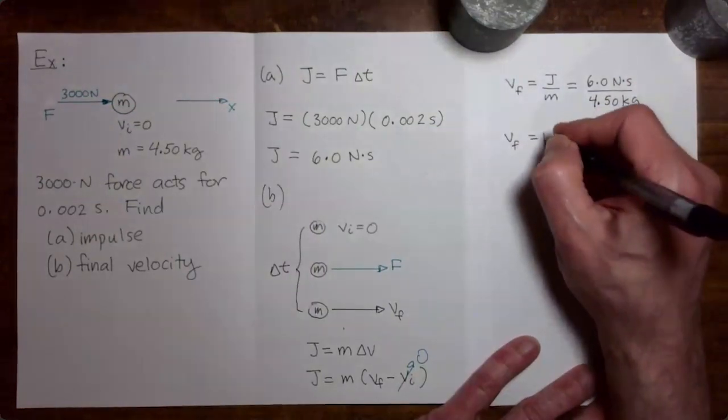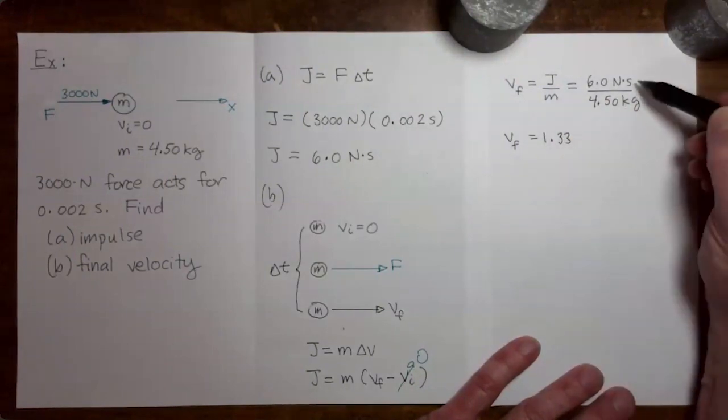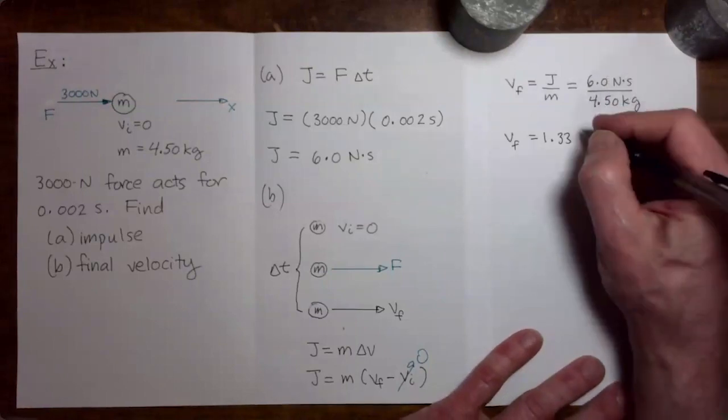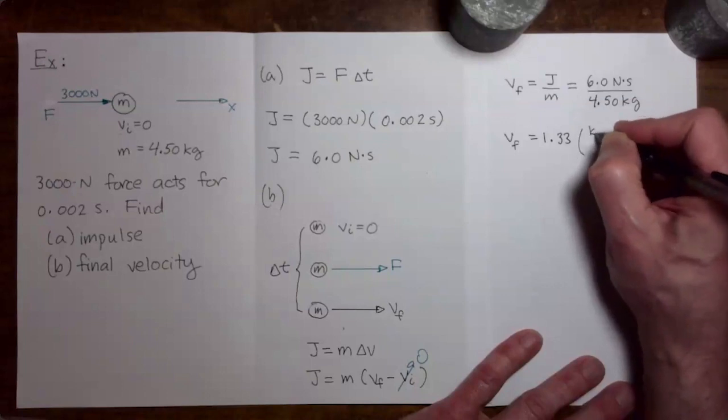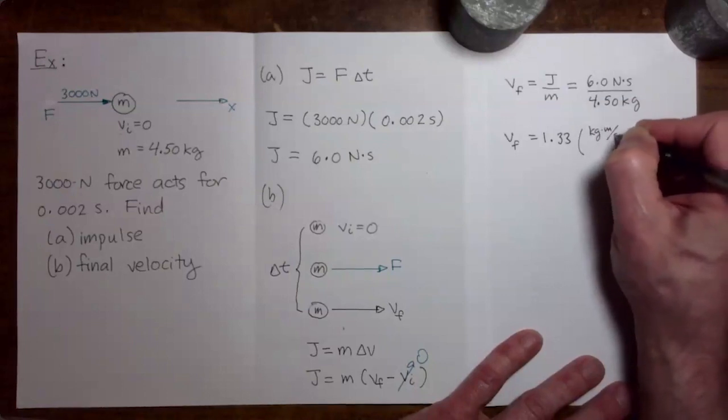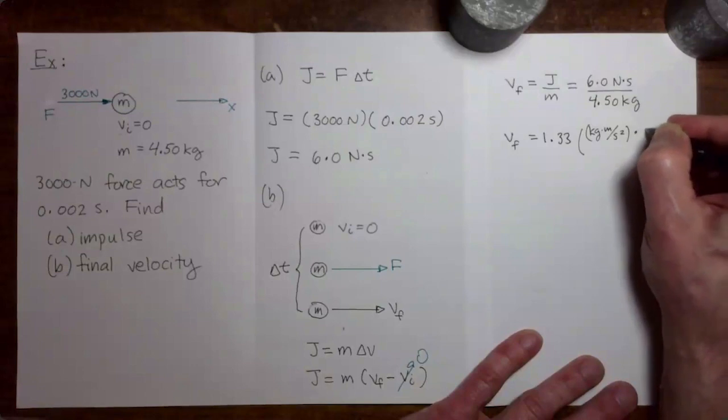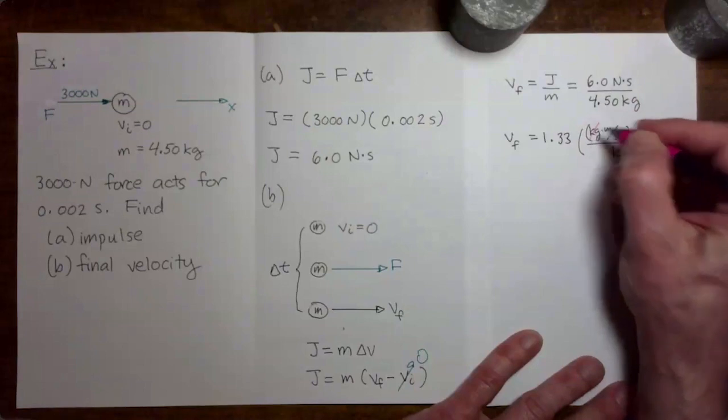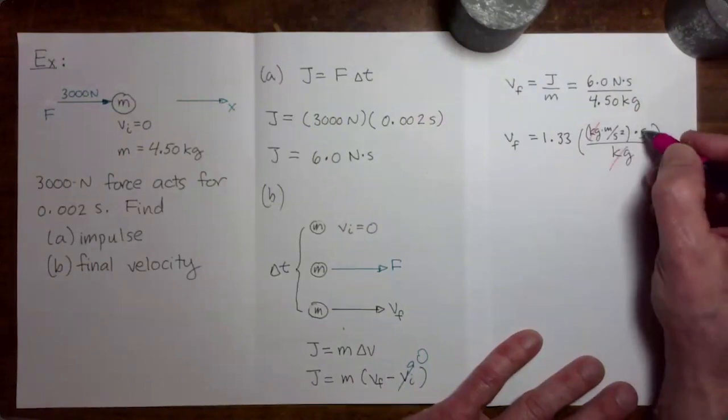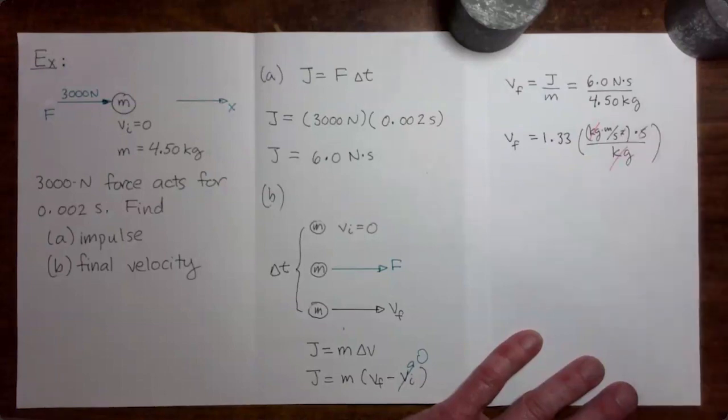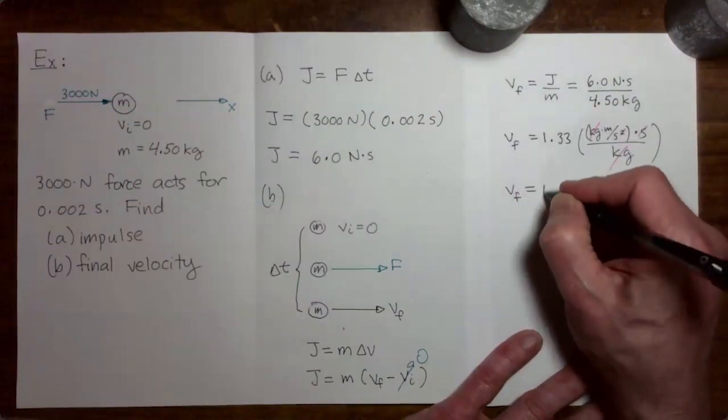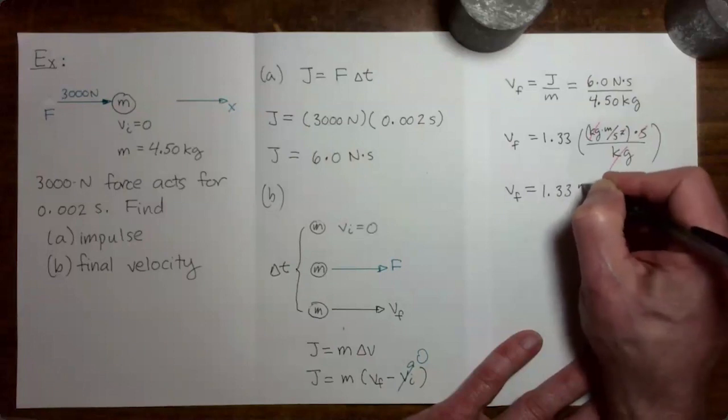The numerical value here is 1.33, but we want to check that the unit actually comes out to be meters per second. So let's expand newton. A newton is kilogram times meter per second squared. All of that is multiplied by seconds. We divide by kilograms. So we have kilograms cancelling kilograms. We have seconds over seconds squared, so we have one factor of seconds left in the denominator. So you can see that what remains is meters per second. And we have our final velocity is 1.33 meters per second.